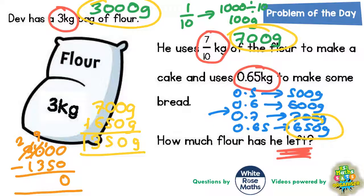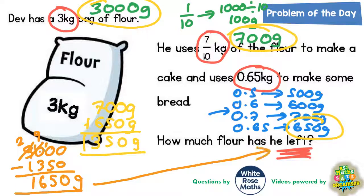And now we can continue. Ten take away five is five, nine take away three is six, and two take away one is one. So it's 1,650g left. That is the final answer to our question: 1,650g.